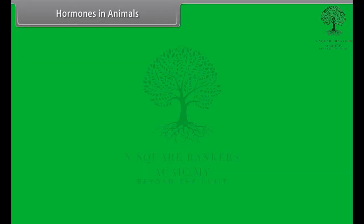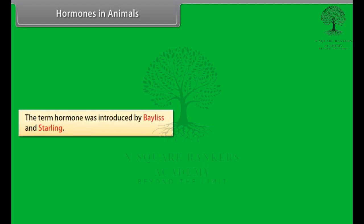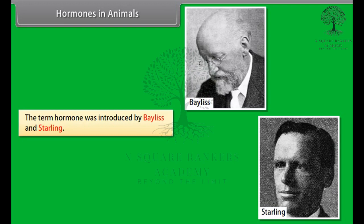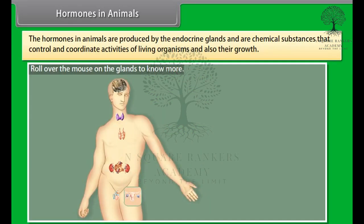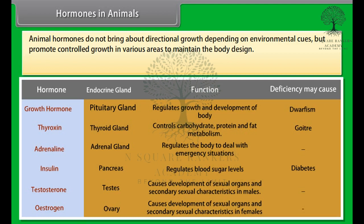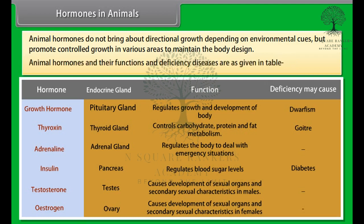The term hormone was introduced by Bayliss and Starling. Hormones in animals are produced by the endocrine glands and are chemical substances that control and coordinate activities of living organisms and their growth. Animal hormones do not bring about directional growth depending on environmental cues but promote controlled growth in various areas to maintain the body design. Animal hormones and their functions and deficiency diseases are as given in the table.